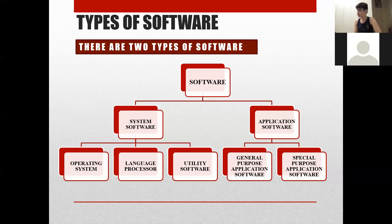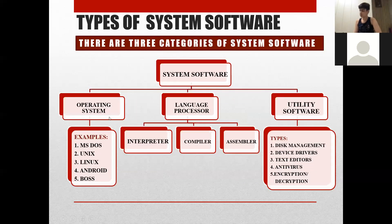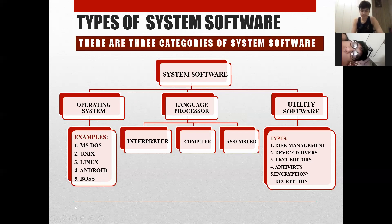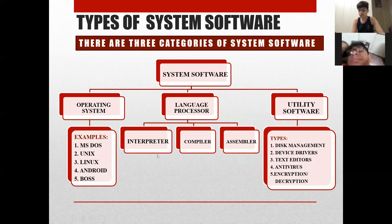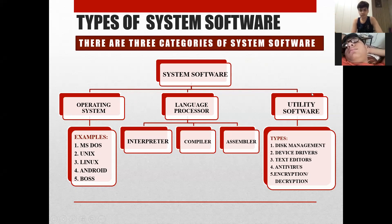In the previous class, we learned that system software is divided into three parts. Operating system examples are MS-DOS, UNIX, Linux, Android, BOSS, iOS, and Windows. Language processors — there are three: interpreter, compiler, and assembler.